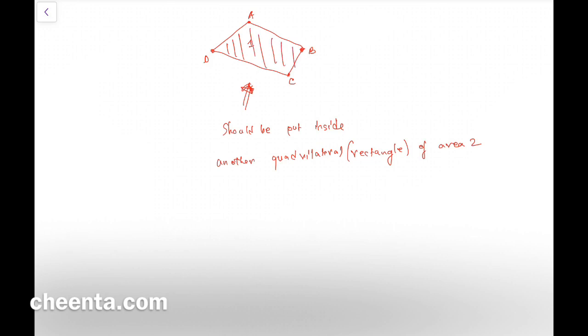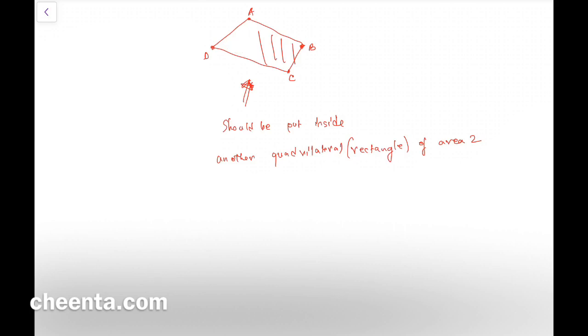That's our job: to find that rectangle in which we can put this area one quadrilateral. Can we always do that? That's the question. This solution was supplied by one of the Cheenta faculties, Rito Broto, so thanks to him. Here is what he says: just join BD or AC—doesn't matter which one you want to join, but join any one of them. Join BD. You will get at least one diagonal which will work. This is by convexity.